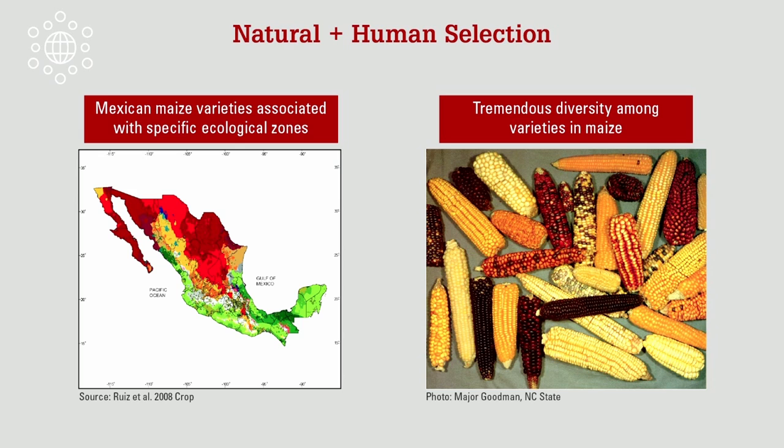There was selection by human beings for corn that would grow in very different environments. In Mexico alone, you have lowland tropics that are very hot, very humid, with lots of rainfall; highland areas where it gets pretty cool; limited rainfall in some regions; very dry areas; different disease pressures; and different timing of rain. This selection for different varieties that grow in different climates and environments occurred all over the Americas.